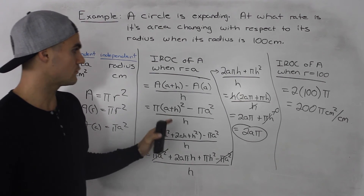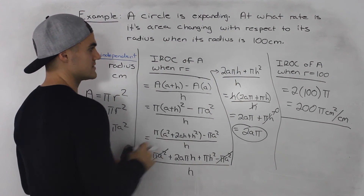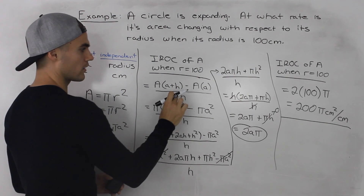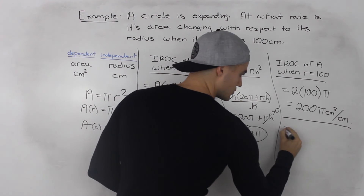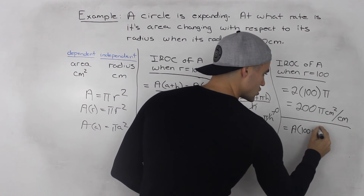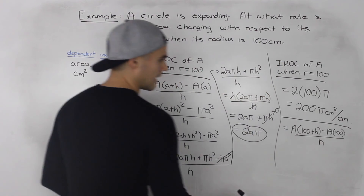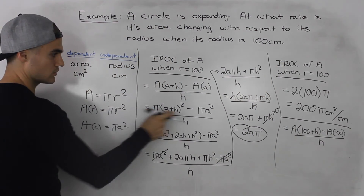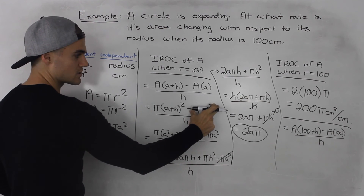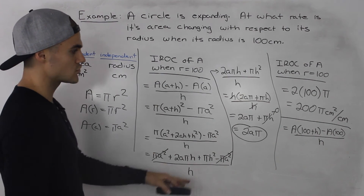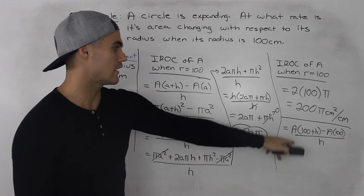A quick note: you could also go straight to finding the rate when r equals 100 without the general expression. Instead of using small a values, you'd put 100 directly into the difference quotient: A(100 + h) minus A(100), all over h. Then plug 100 + h in for r in the area formula, and 100 for the other. After doing the algebra, instead of a general expression you'd get 200π right away. You can try that on your own.